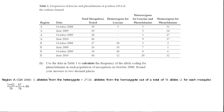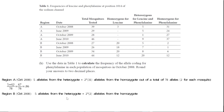For Region B in October 2008, there are 5 alleles from the heterozygote and 2 mosquitoes in the homozygote — multiplied by 2 gives 4 alleles. So 5 plus 4 equals 9 phenylalanine alleles total. Out of a total of 54 alleles (27 mosquitoes × 2), nine out of 54 gives a frequency of 0.17.